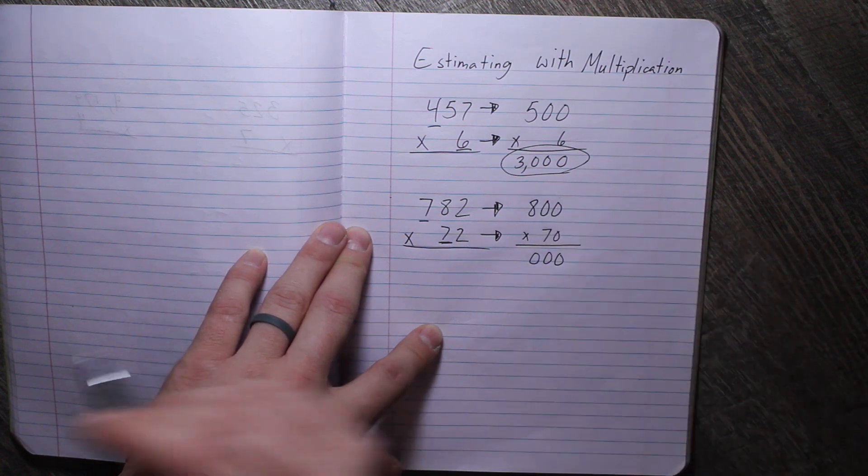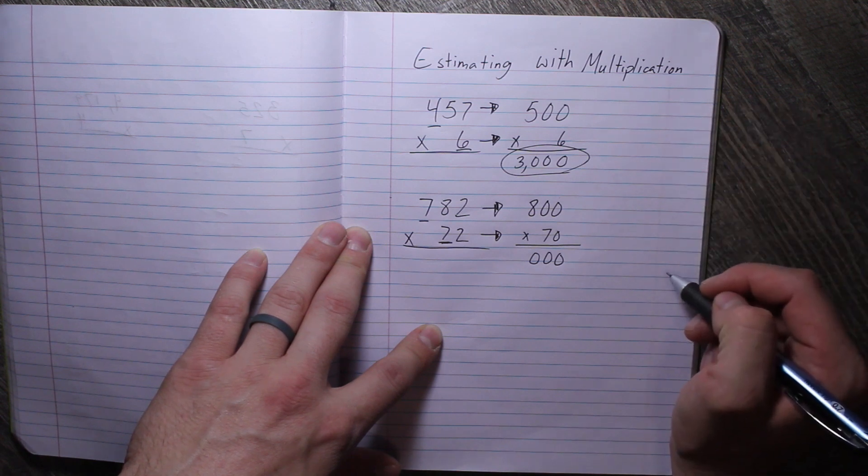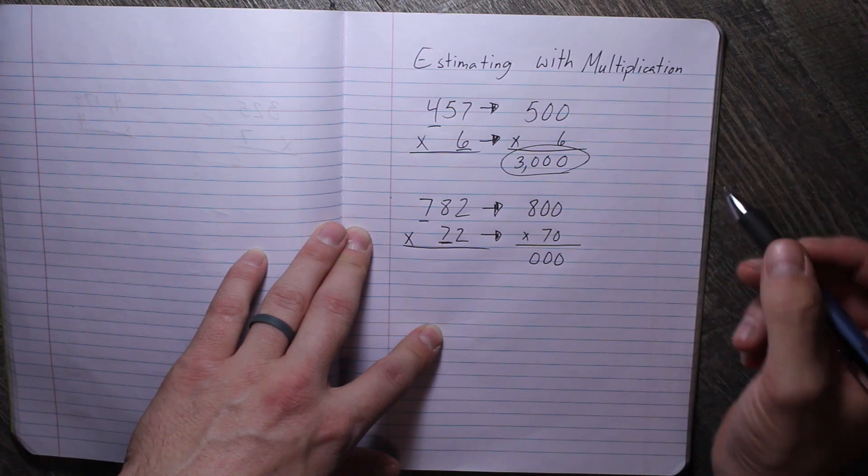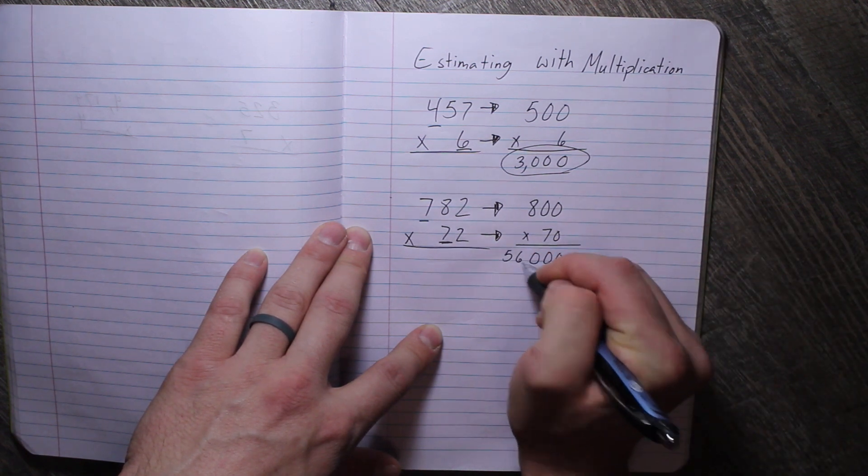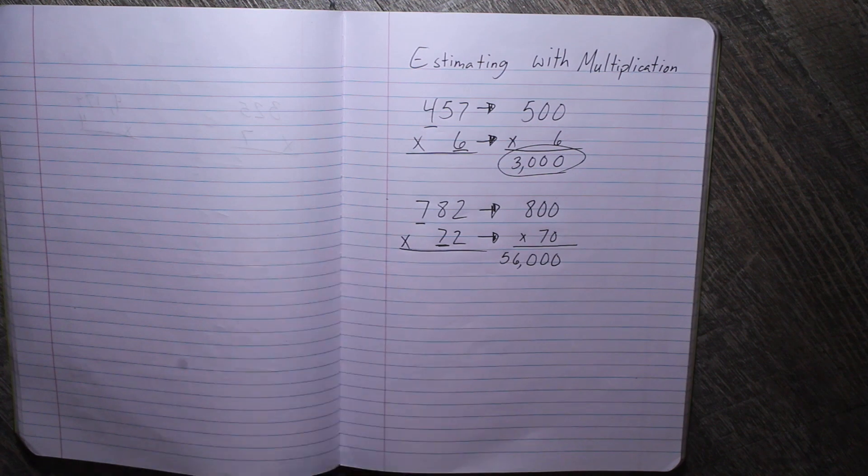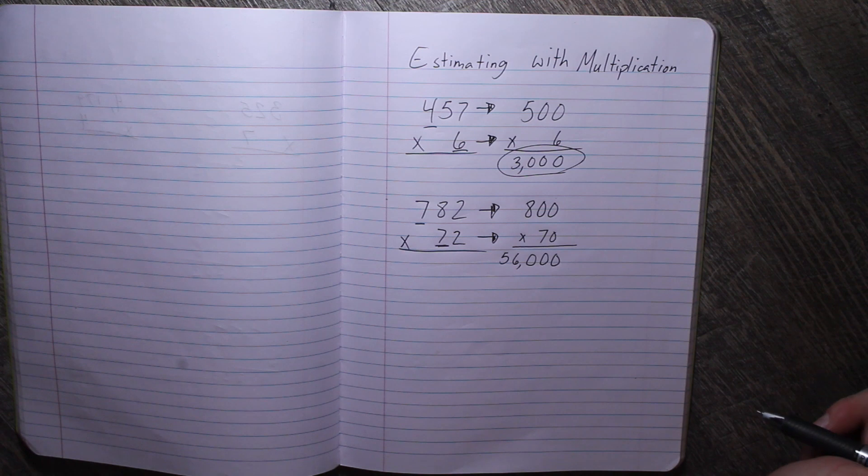And seven times eight, if you don't recall, you can again, write your multiples all the way down the side. But seven times eight is 56. So that goes here. And so 782 times 72 is about 56,000.